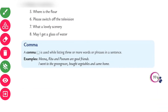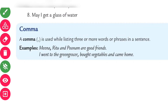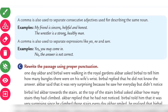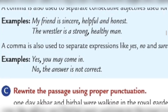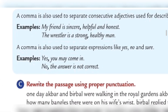Now about the comma. A comma is used while listing three or more words or phrases in a sentence. Mina, Ritu, and Punam are good friends. A comma is also used to separate consecutive adjectives describing the same noun. My friend is sincere, helpful, and honest. The wrestler is strong and healthy. A comma is used to separate expressions like yes or no. Yes, you may come in. No, the answer is not correct.